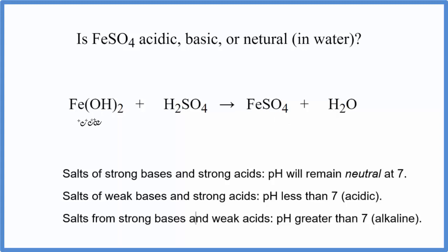So if we have iron 2 hydroxide and we add that to sulfuric acid here, that'll give us our iron 2 sulfate. So we know the chemicals we're dealing with, and now we need to figure out the strength of each one of these substances.